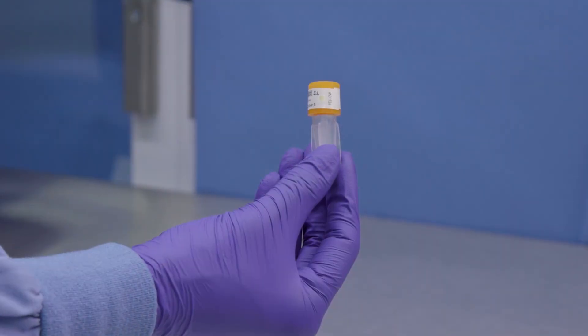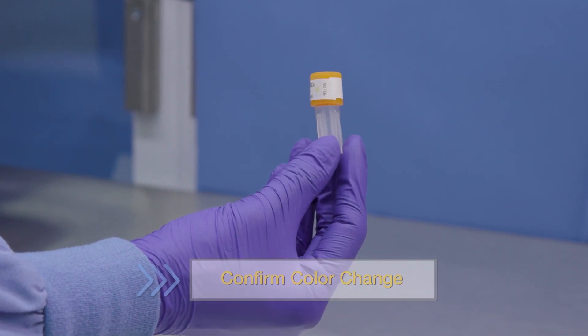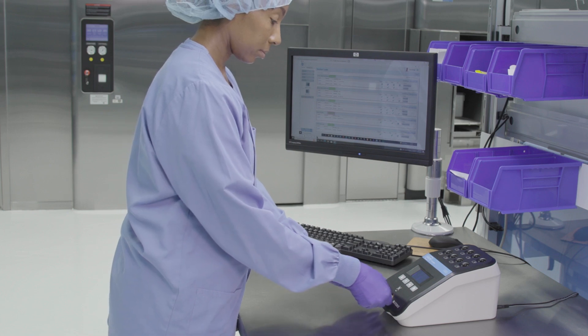Next, remove the BI from the pouch and confirm the process indicator color change from magenta to orange-yellow, indicating exposure to vaporized hydrogen peroxide.